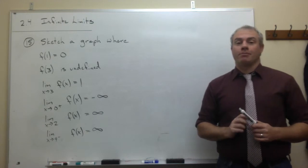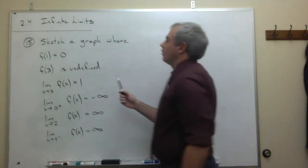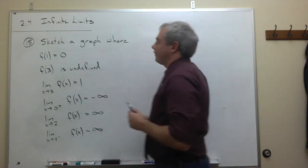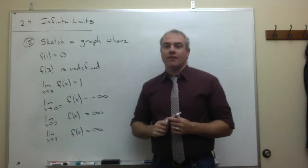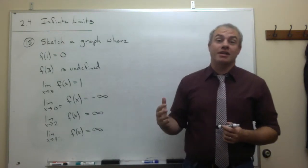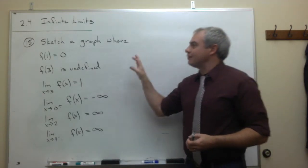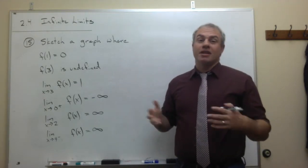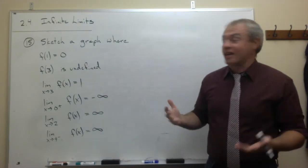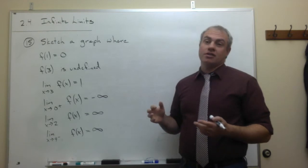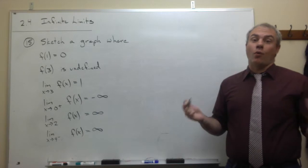Now let's take a look at problem number 15. In problem 15, we want to sketch a graph of a given function, and the problem gives us a few different characteristics that they want the function to have. Something that can be tricky about a problem like this is that there isn't just one function that satisfies all of these conditions — there's more than one answer. We just have to find one of them.